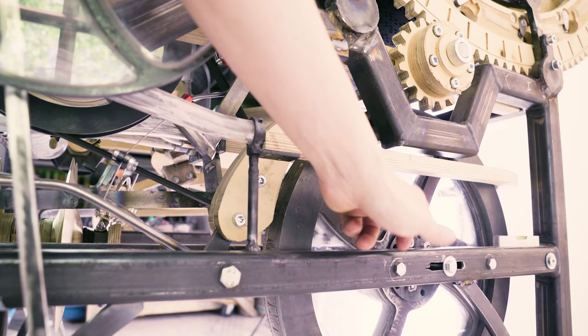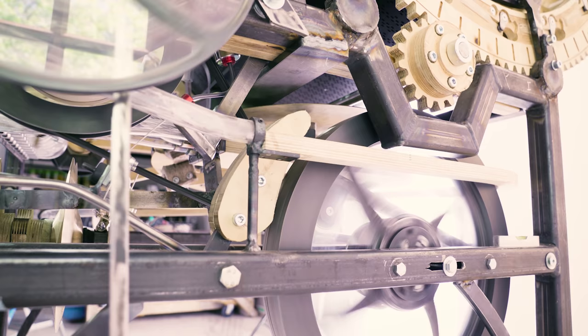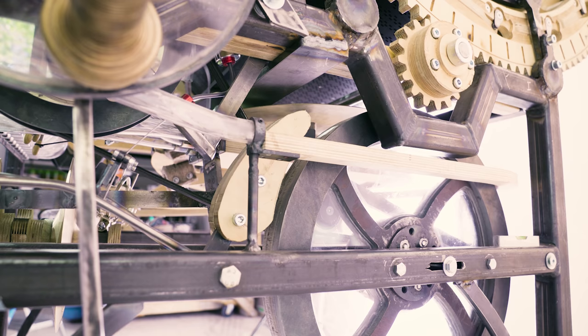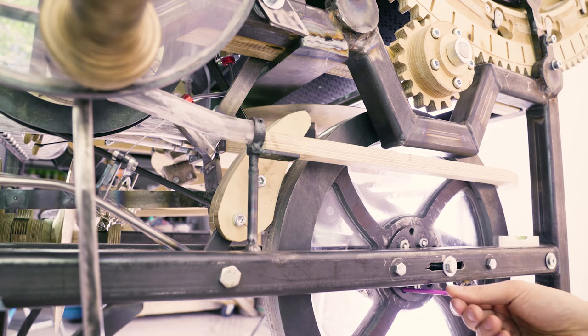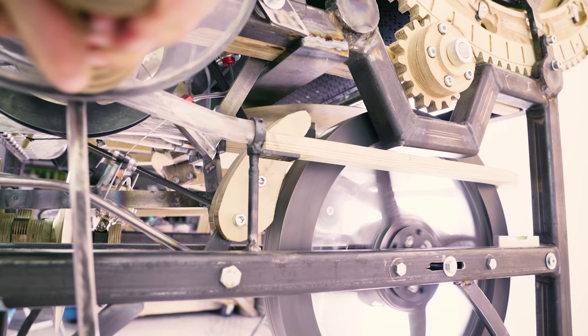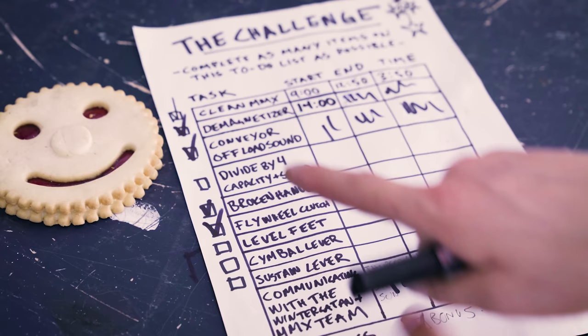Flywheel clutch. The flywheel of the Marble Machine X has a safety clutch. It trips too late. Inside the flywheel we have these set screws. If I push them counterclockwise, we reduce the spring tension of the clutch release. Now it should trip earlier. Perfect.